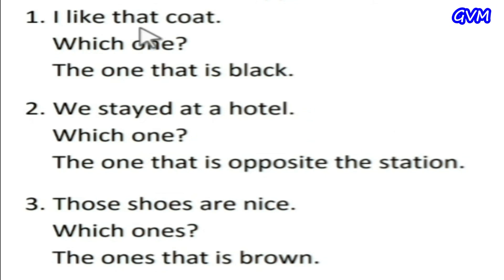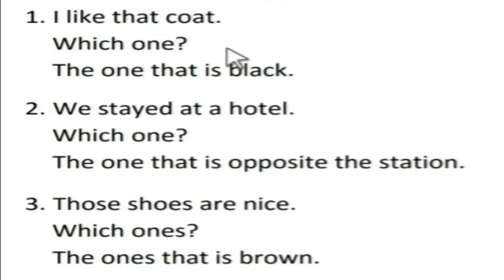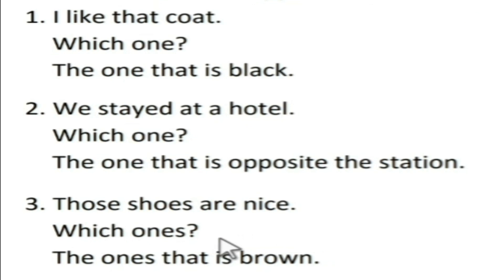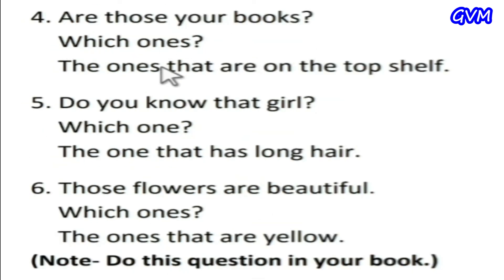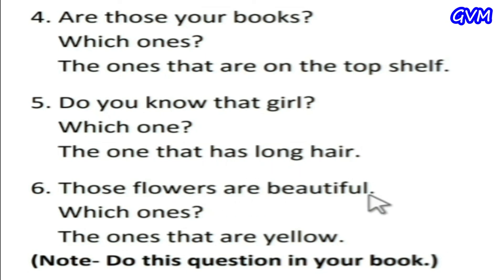First: 'I like that coat' — 'which one?' — 'the one that is black.' Second: 'we stayed at a hotel' — 'which one?' — 'the one that is opposite the station.' Third: 'those shoes are nice' — 'which ones?' — we use 'ones' because 'shoes' is plural — 'the ones that are brown.' Fourth: 'are those your books?' — 'which ones?' — 'the ones that are on the top shelf.' Fifth: 'do you know that girl?' — 'which one?' — 'the one that has long hair.' Sixth: 'those flowers are beautiful' — 'which ones?' — 'the ones that are yellow.' Do this question in your book.